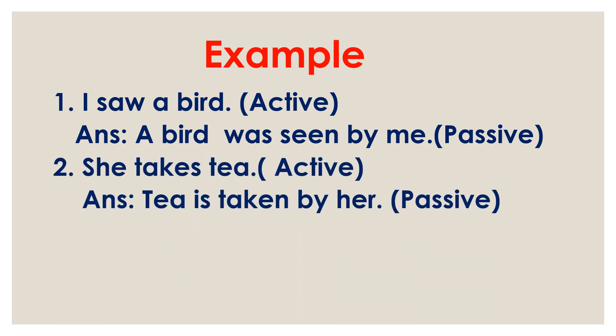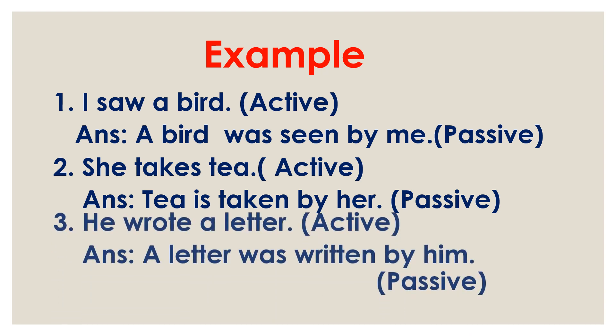Second example: 'She takes tea.' Here 'she' is subject, 'takes' is verb, and 'tea' is object. So at first we use object 'tea', then helping verb 'is' — because 'takes' is in present tense and the subject is singular — then third form of 'take', that is 'taken', then 'by', then 'she' used after 'by' changes to 'her'. So the passive is: 'Tea is taken by her.'